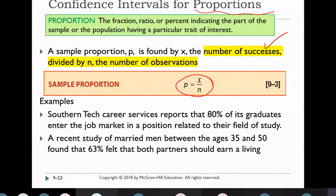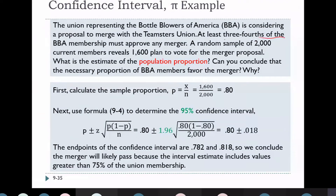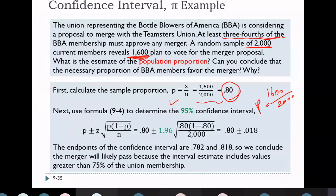The Z value depends on the confidence level — for 95%, Z = 1.96. Example: A union requires at least three-fourths of members to approve any merger. A random sample of 2,000 members reveals 1,600 plan to vote for the merger. So p̂ = 1,600 / 2,000 = 0.8. The estimated population proportion is 0.8.